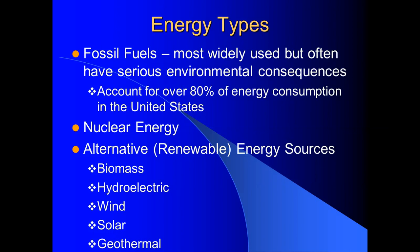Let's talk about the three energy types we're going to cover in this class: fossil fuels, nuclear, and our alternative or renewable energy sources. Fossil fuels are the most widely used — about 80% of the energy consumed in this country comes from coal, oil, and natural gas. However, even though they're the most widely used, we're going to see they have the most serious environmental impacts.